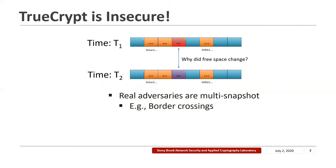This is because if some part of the hidden data changes in between snapshots, then this results in changes to the free space. If the free space is not storing any meaningful information, then it should not change usually. Real adversaries in plausible deniability scenarios usually have multi-snapshot capabilities — for example, officers at border crossings in an oppressive regime that can snapshot your device every time you enter and leave the country.